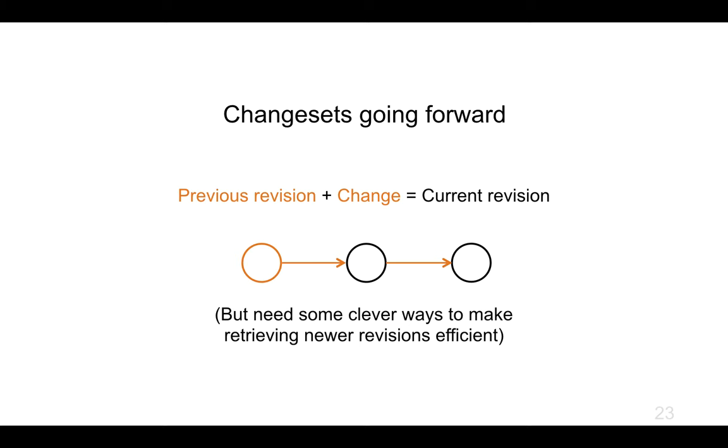And if you've used a version control system called Subversion, this is essentially what it does. It stores particular versions and patches going forwards, but it has a little algorithm about which versions along the way it's going to keep.